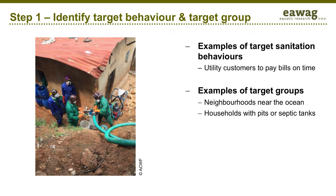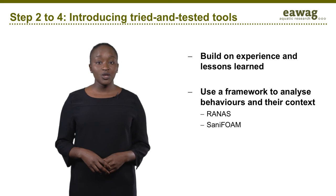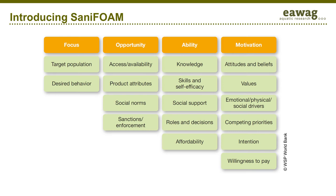For Step 1, let's assume that you already know the target behavior, which is, in this case, getting utility customers to pay their bills on time. To this end, you need to identify which type of customers exactly you are targeting — this is identifying the target population. It may be a particular subgroup of individuals, for example, all neighborhoods with septic tanks bordering the ocean. To carry out the next steps two to four, several tried and tested frameworks or tools exist. We will first introduce two of them, namely the RUNNERS and the SUNNYFORM approach. Ideally, you apply them in the planning phase of your project.